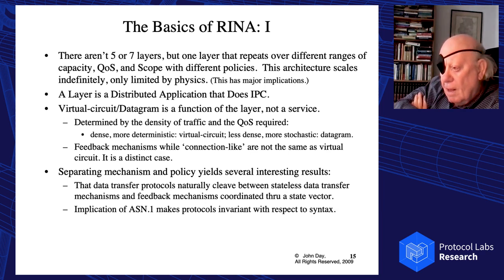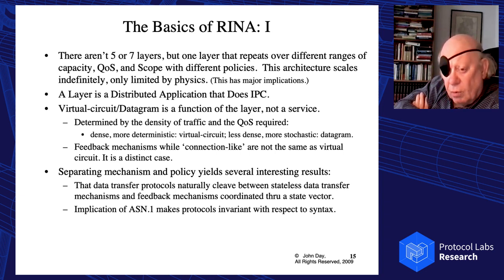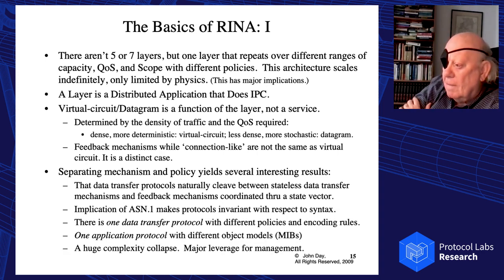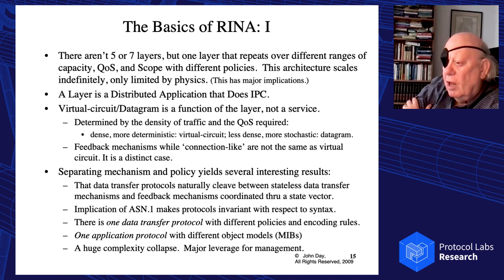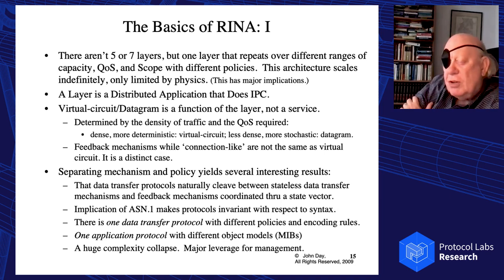One thing in that whole debate that got things astray was that feedback mechanisms in error and flow control protocols like TCP — the flow control and retransmission control — were categorized as connection-oriented, when they really aren't part of the same problem at all. Applying separation of mechanism and policy to these protocols reveals that the mechanisms fall into two categories: those that have to be with the data, and those that don't. The two pieces are virtually separate and really don't talk to each other. This is a huge complexity collapse.